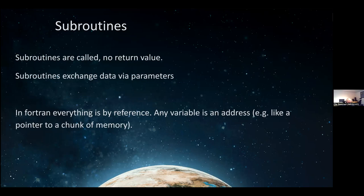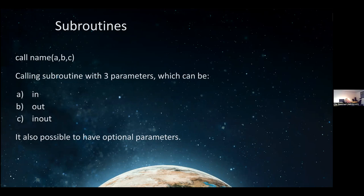Subroutines are called with the keyword `call`. You issue the word `call`, the name of the subroutine, and some parameters. Data is exchanged via these parameters - they could be `in`, `out`, or `inout`. You need to specify whether parameters are input, output, or both input and output. It's also possible to have optional parameters, where if you provide them the value you give is used; if not, they are either not used or a default is provided. That's up to you when you write the subroutine.